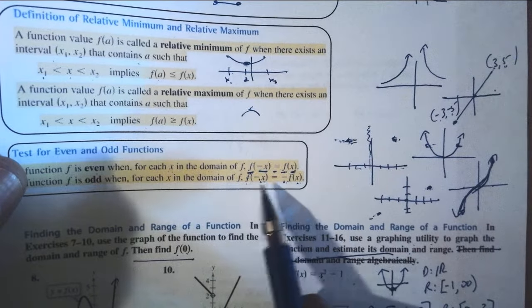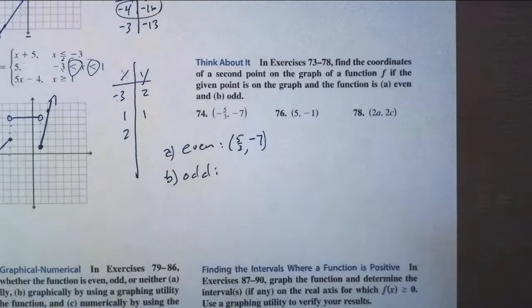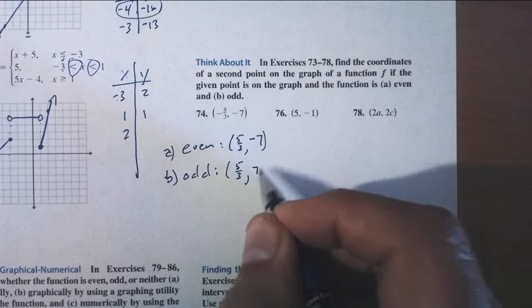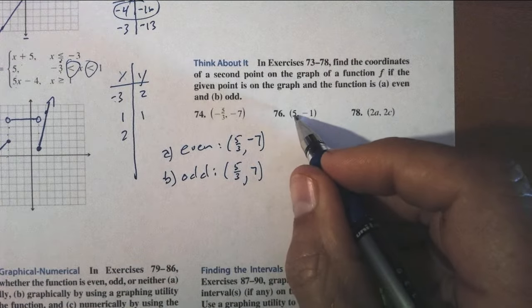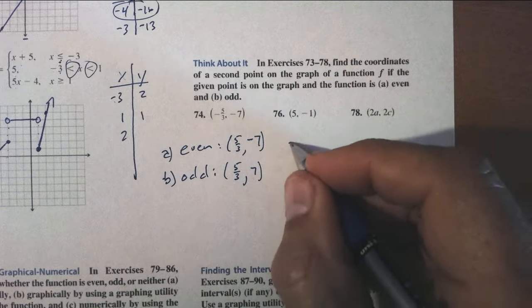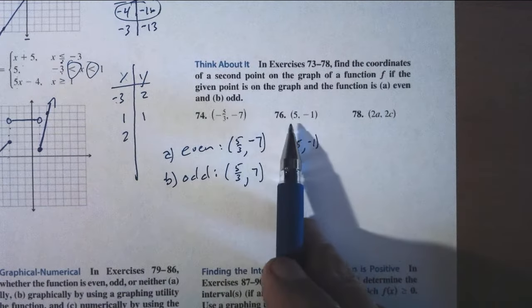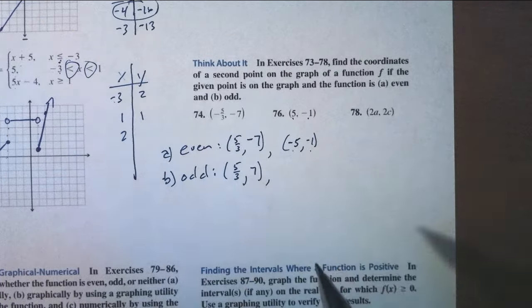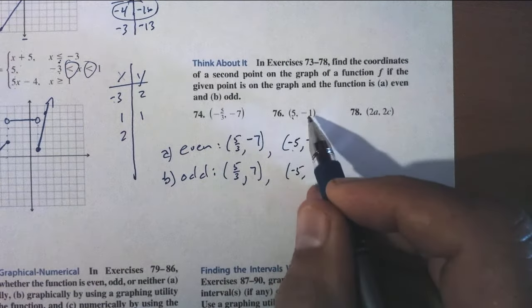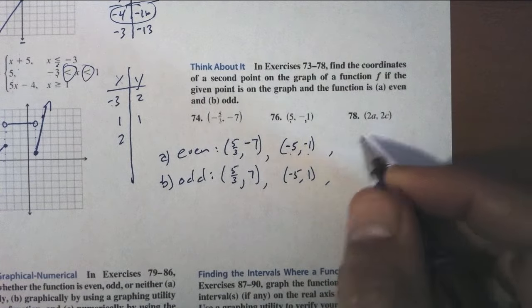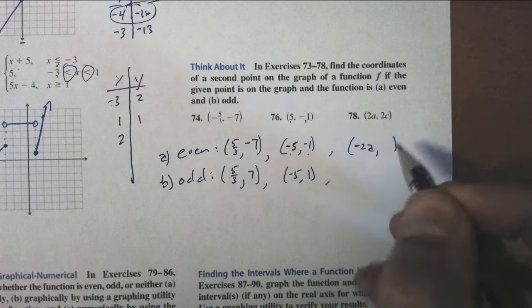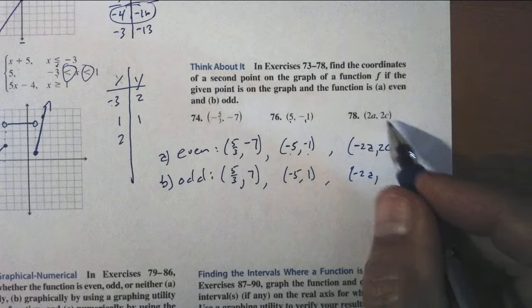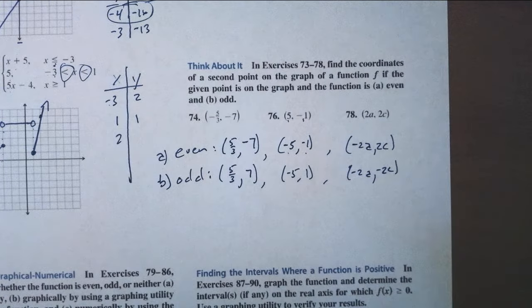For an odd function, the height to the left is the opposite of the height to the right. So if going right 5 gives negative 1, going left 5 also gives negative 1 for an even function — same height. For an odd function, to the left you get the opposite height. For the point (2a, 2c): if even, going to negative 2a gives 2c; if odd, going to negative 2a gives the opposite, negative 2c.